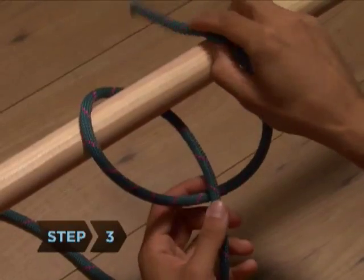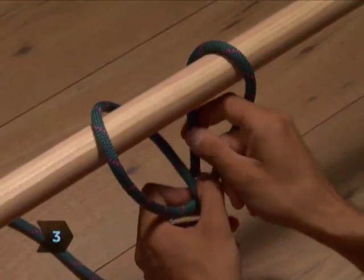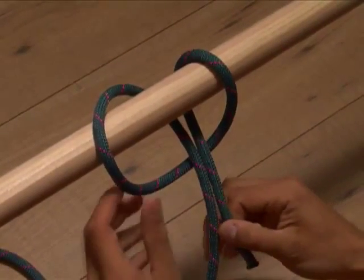Step 3. Wrap the end around the ring or post again, this time from front to back.